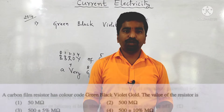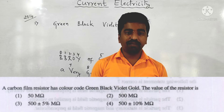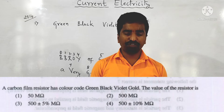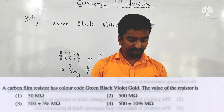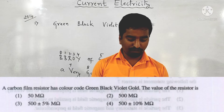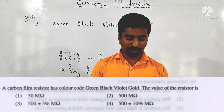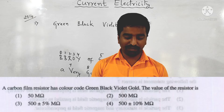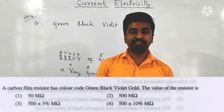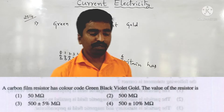Let's move on to the 2014 paper. First question: a carbon film resistor has a color code of green, black, violet, gold. What is the value of the resistance?